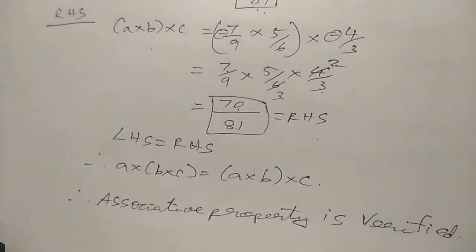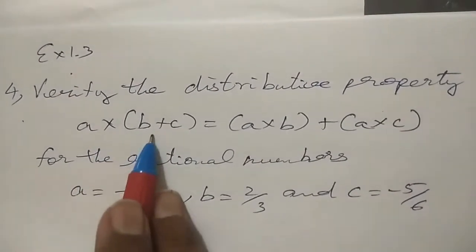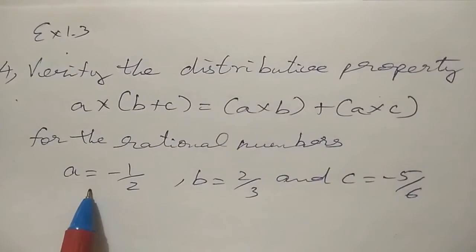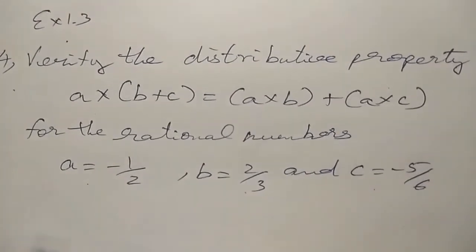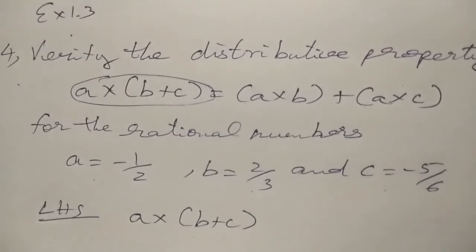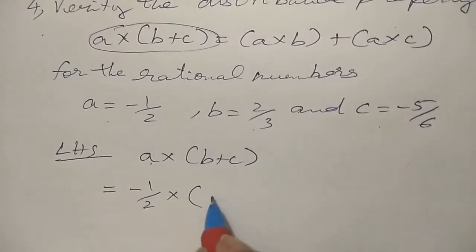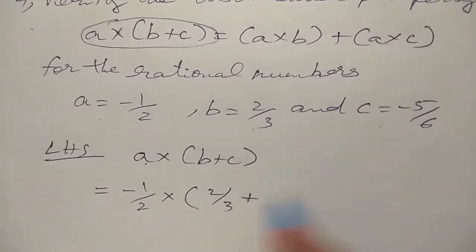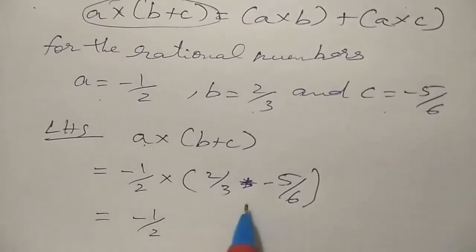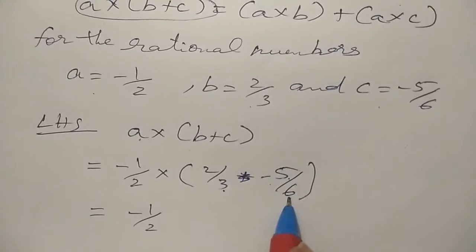Exercise 1.3, the fourth sum. Verify the distributive property: a into (b plus c) equals a into b plus a into c, where a equals minus 1 by 2, b equals 2 by 3, and c equals minus 5 by 6. Left hand side is a into (b plus c). We have minus 1 by 2 into (2 by 3 minus 5 by 6).